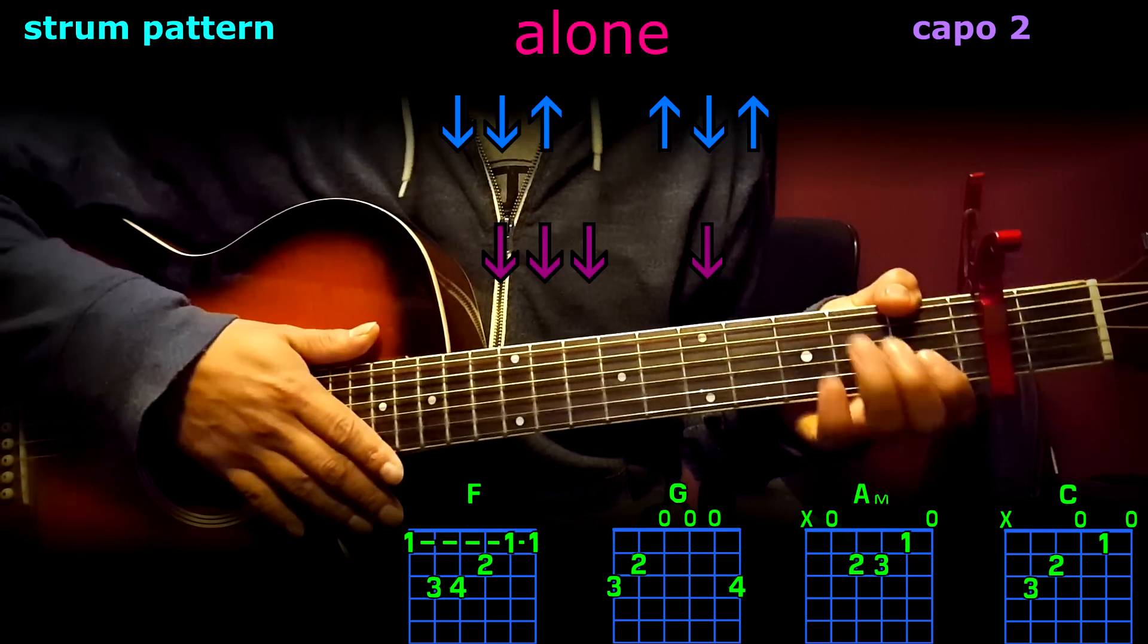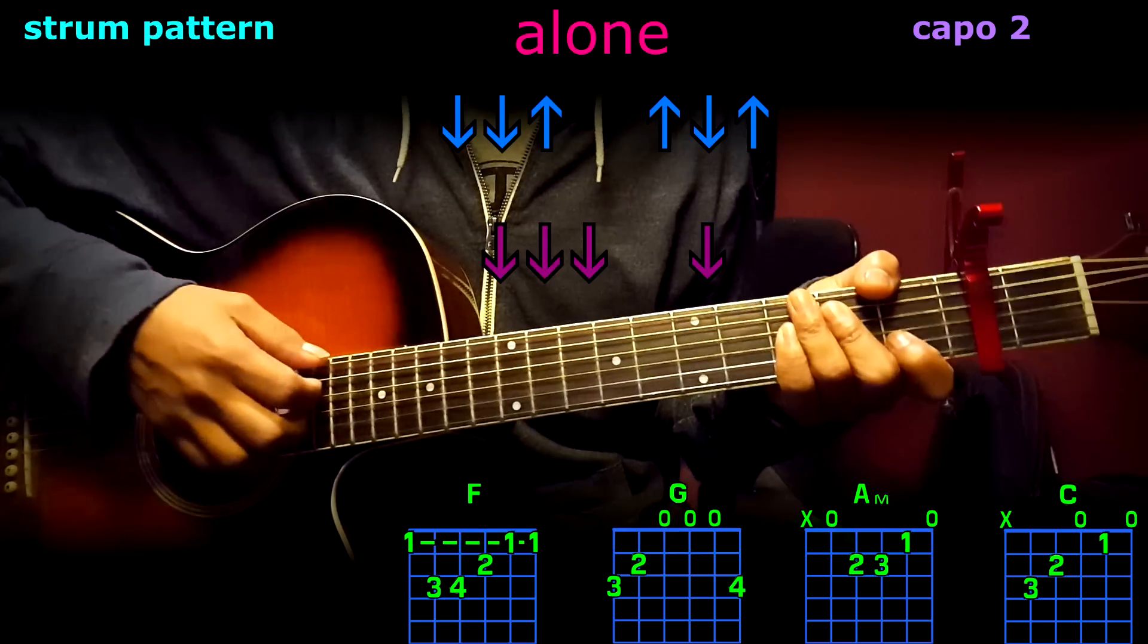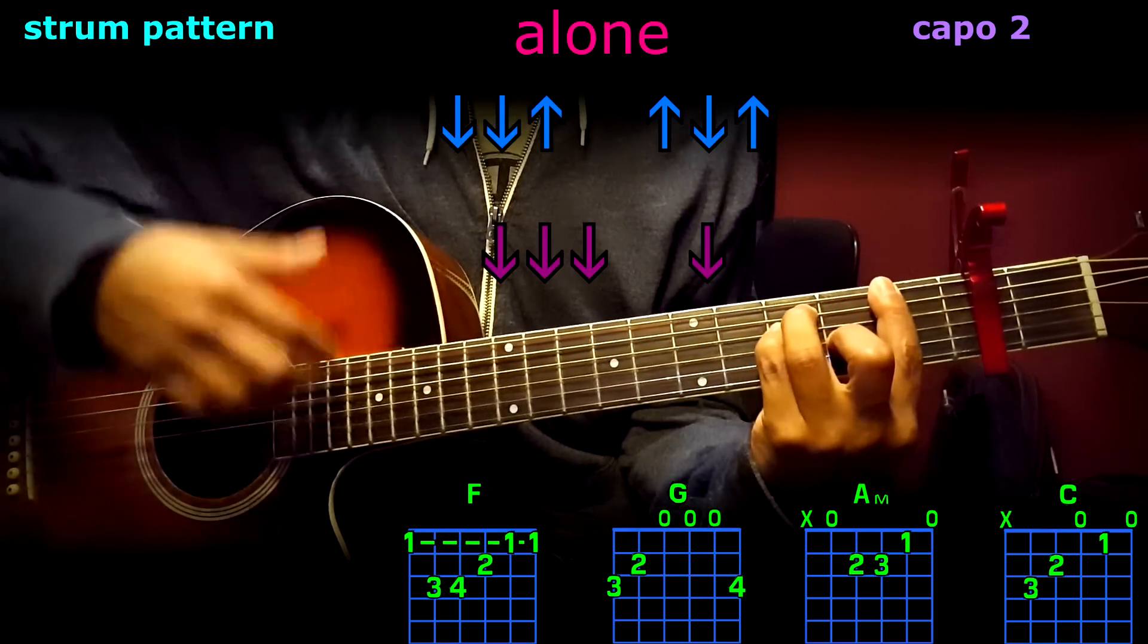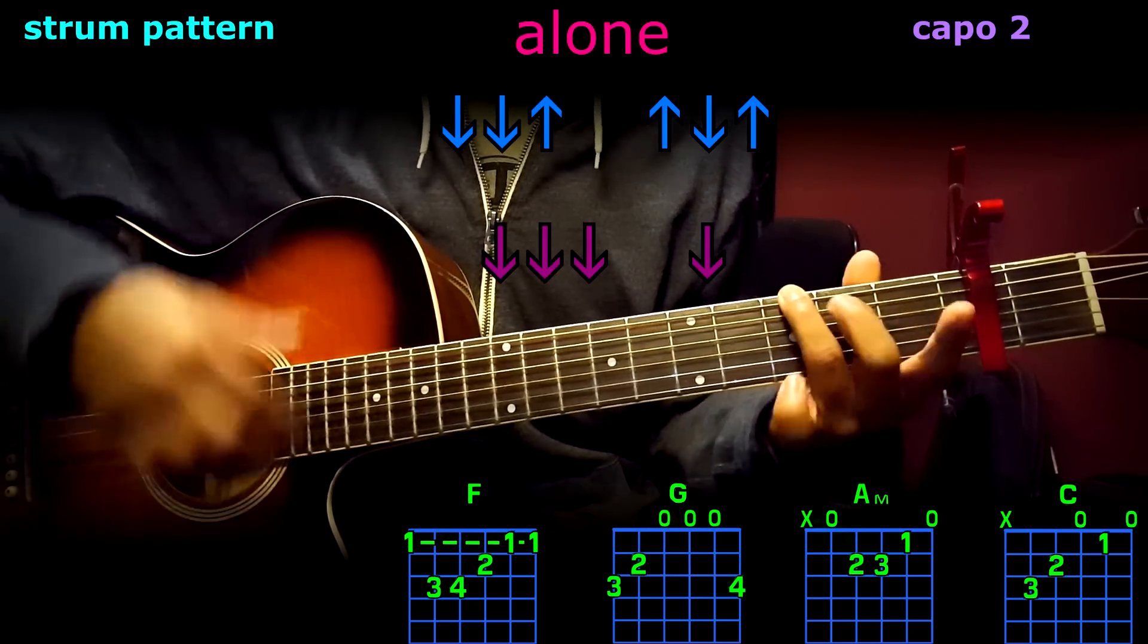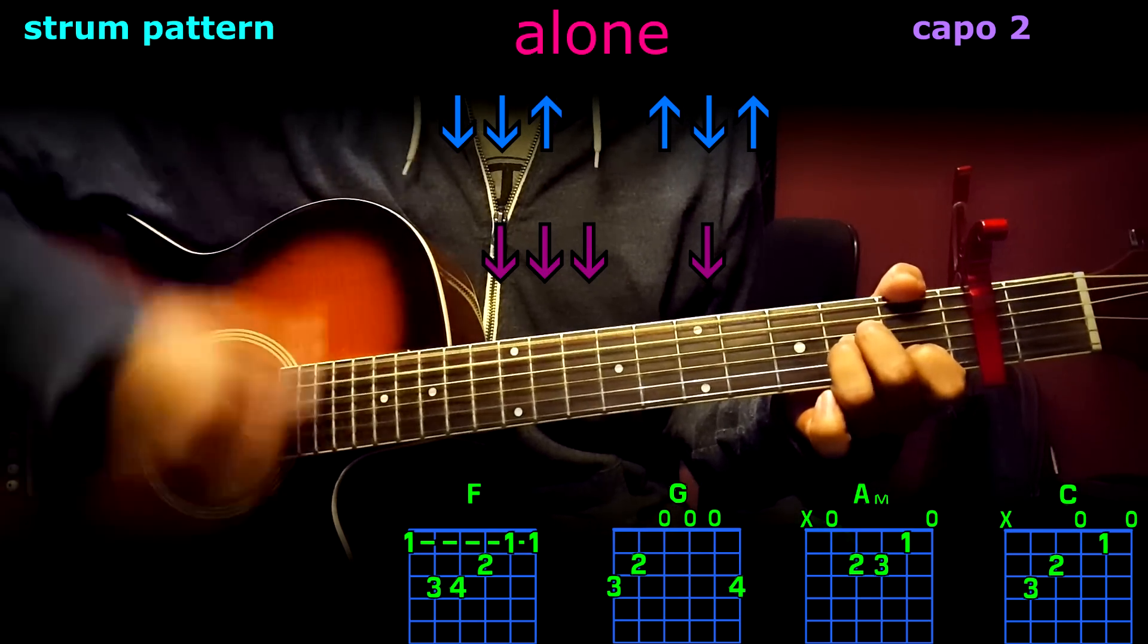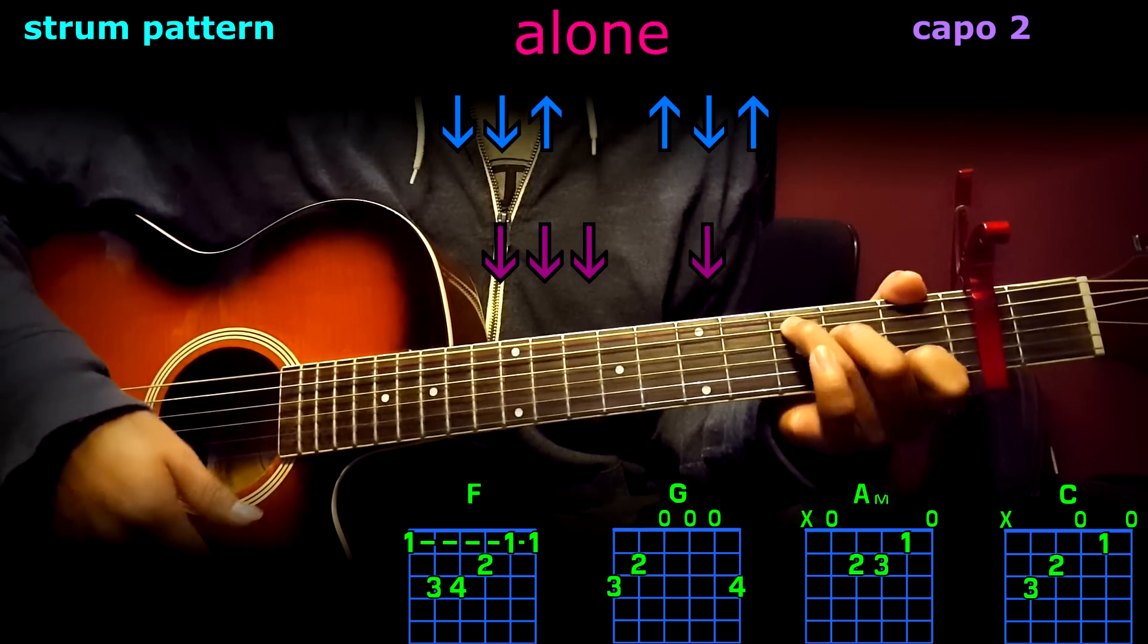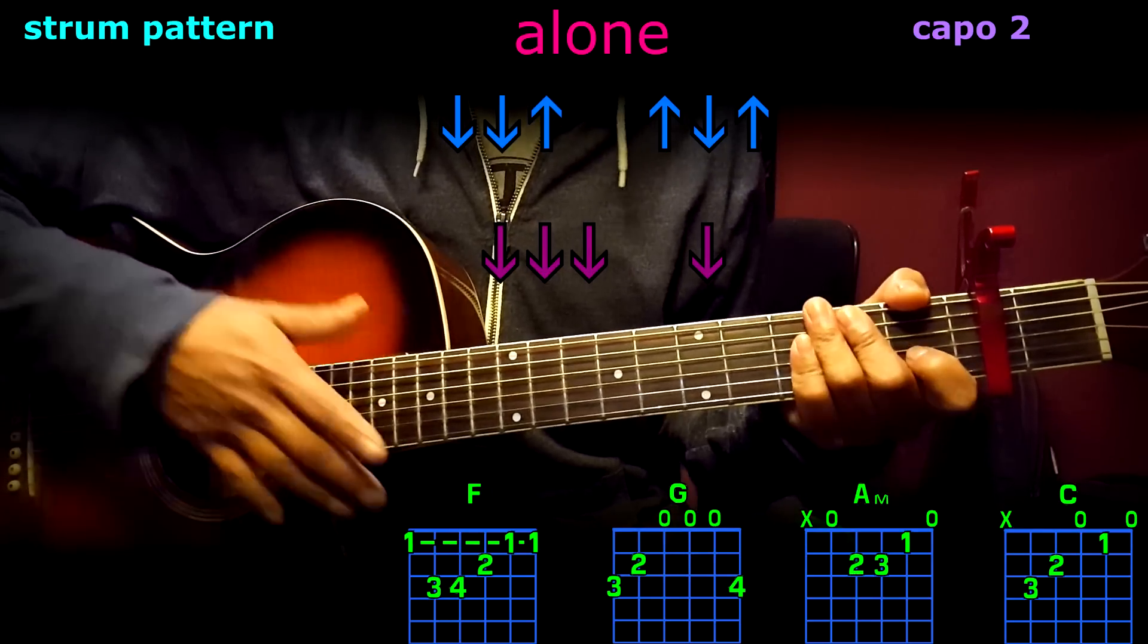Cool, now another rhythm we're going to be using is four strum downs per chord. For example, F four times. Now G, 1, 2, 3, 4, and then A minor 1, 2, 3, 4, C 1, 2, 3, 4. Yeah, that's pretty much it.